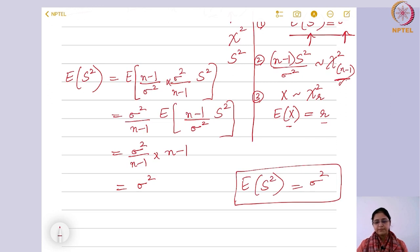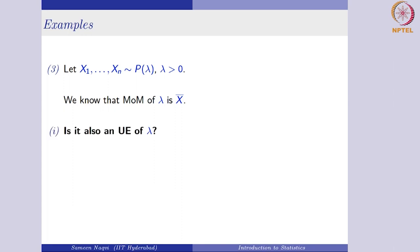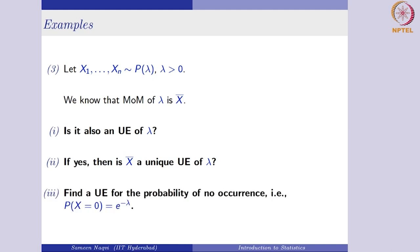We proved this result initially in the sampling distribution chapter for any population; here we have specifically studied the normal distribution. Now let us look at the third example: if you have a random sample from a Poisson distribution with parameter λ, we saw that the method of moments estimator is the sample mean x̄. We want to check whether it is an unbiased estimator for λ, whether it is a unique unbiased estimator, and what the unbiased estimator is for the probability of no occurrence.